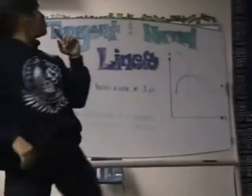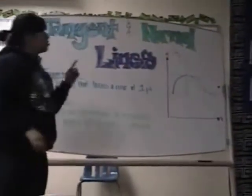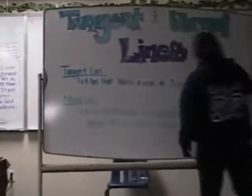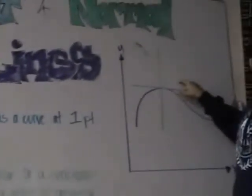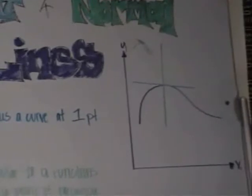What's up guys, I'm here to talk to you about tangent and normal lines. A tangent line is the line that touches the curve at one point. So you see here with this new line, it touches it at one point. A normal line is similar to a tangent line, but it is perpendicular. So you see here with this green line, it is perpendicular to the blue line and touches it at one point.